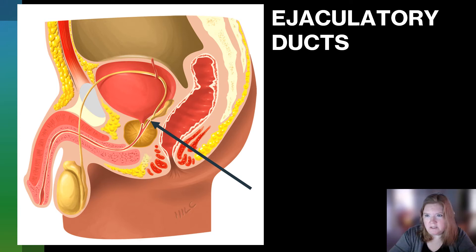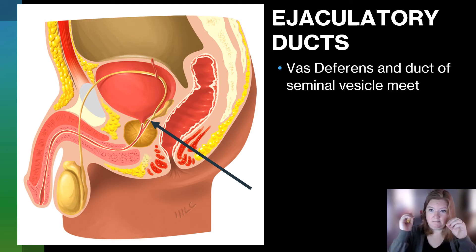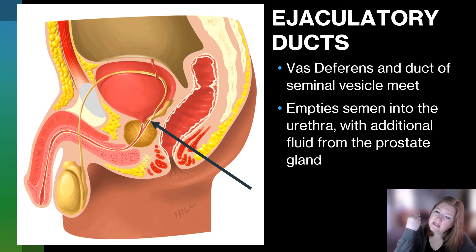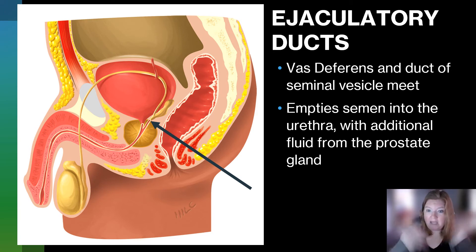The ejaculatory ducts are where the vas deferens and the duct of the seminal vesicle meet. It empties semen into the urethra with additional fluid from the prostate gland. So you take the seminal fluid, take the sperm, take the fluid from the prostate gland, and a couple other glands around there — and voilà, you have semen.